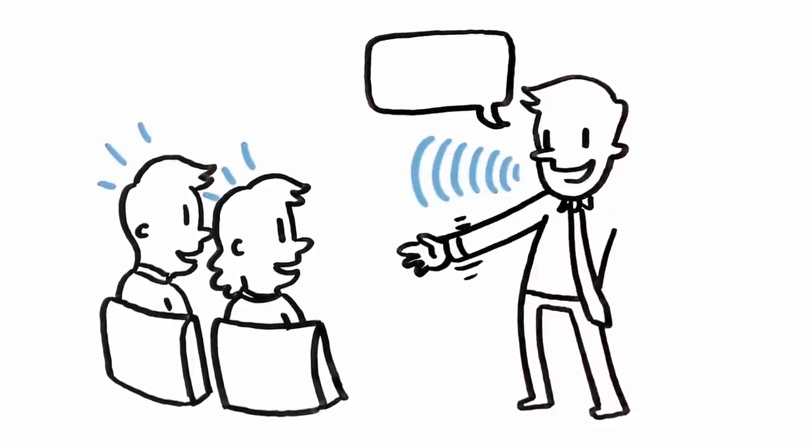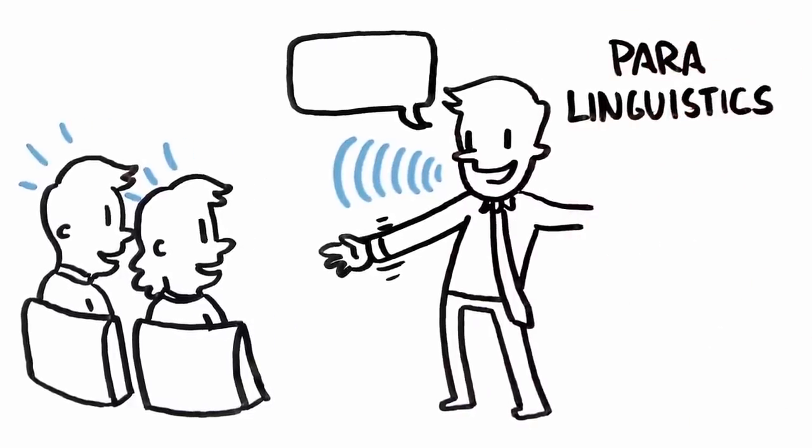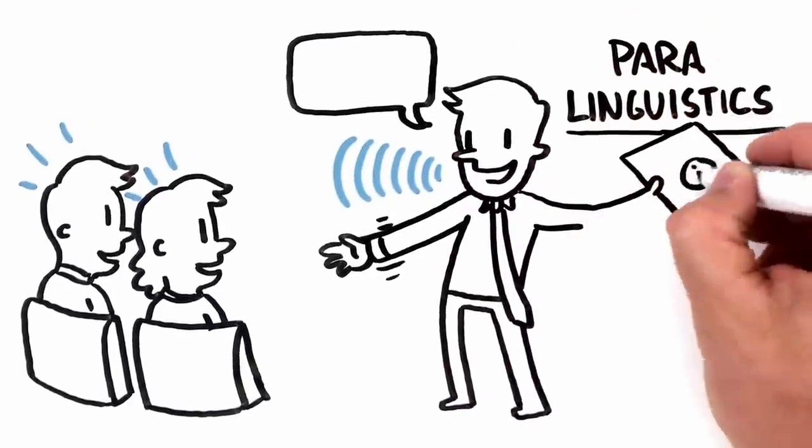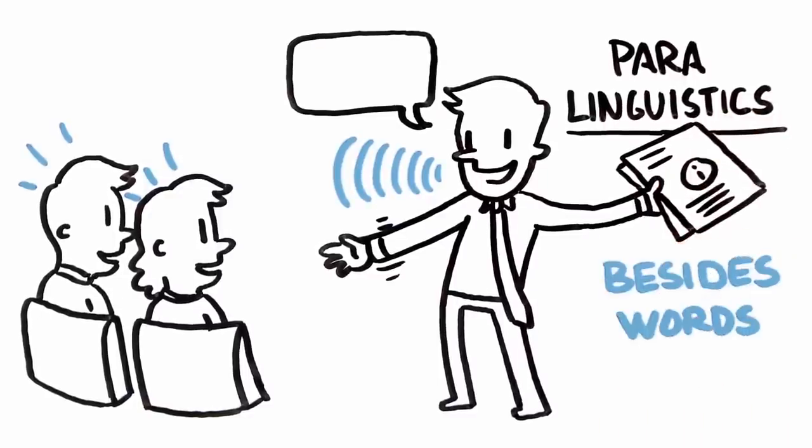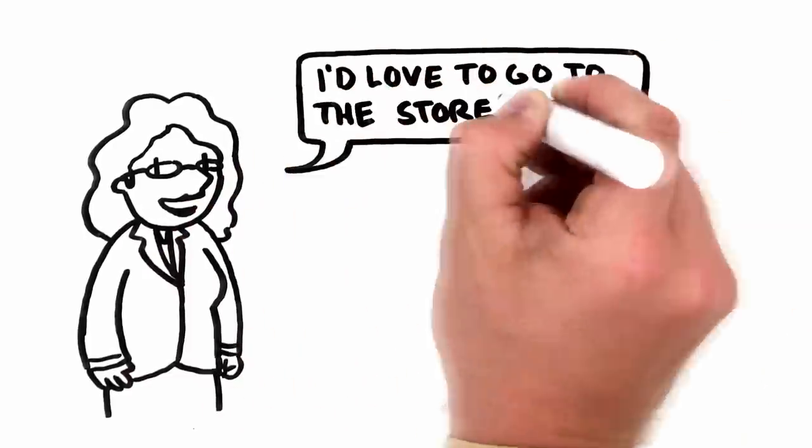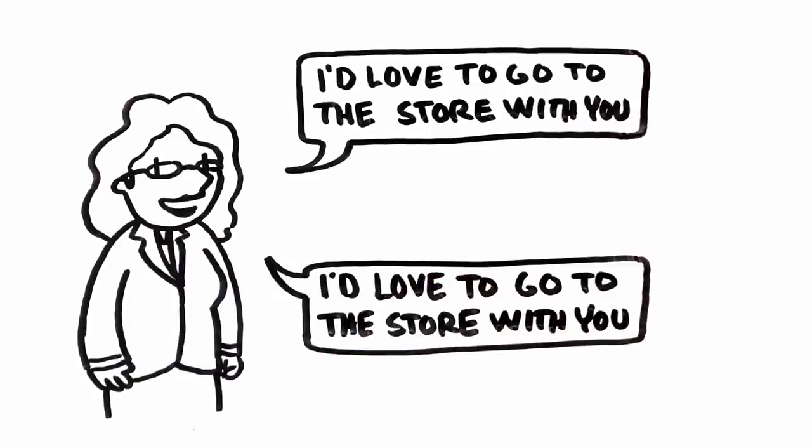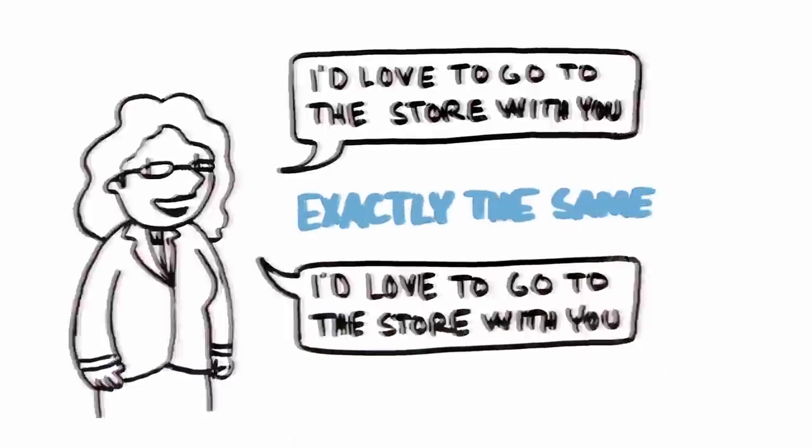There's a special field of study called paralinguistics, which studies how information is communicated besides the words that you say. For instance, I can say, 'I'd love to go to the store with you,' or I can say, 'I'd love to go to the store with you.' In either case, I've said exactly the same words...